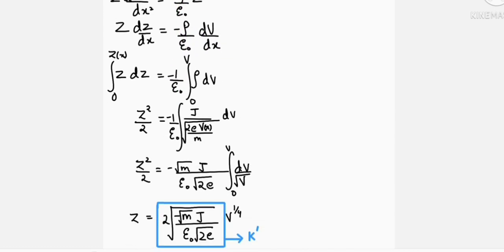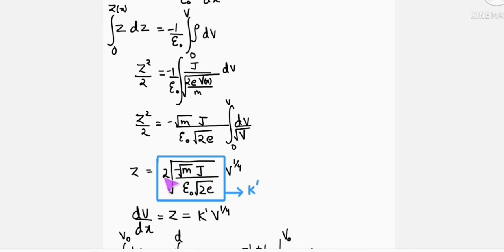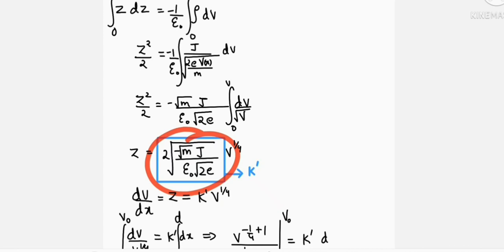On integrating, we get Z equals 2 under root - now this minus is okay because rho itself is negative. So minus under root M, J upon epsilon naught, under root 2 into E, into V raised to 1 by 4. Let's assume this equals K prime.